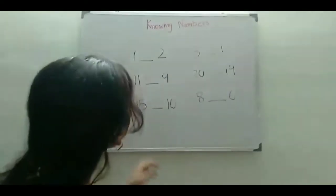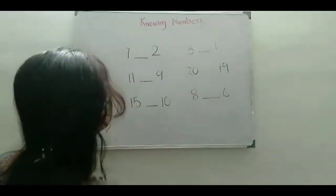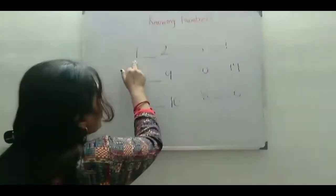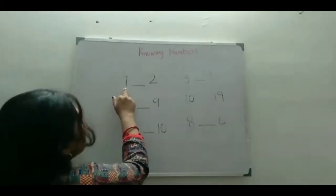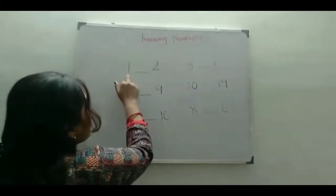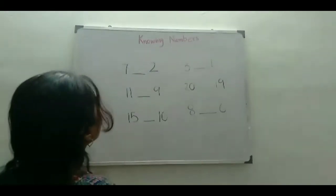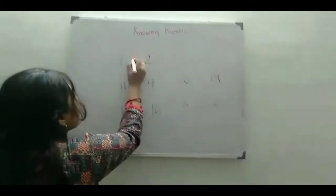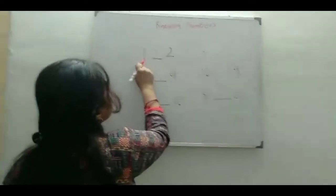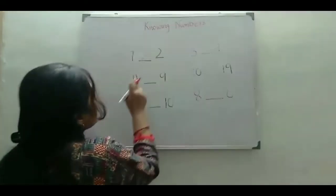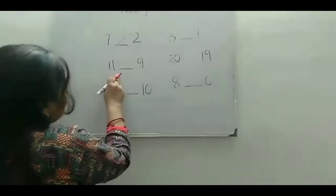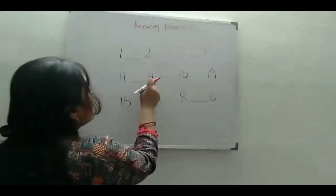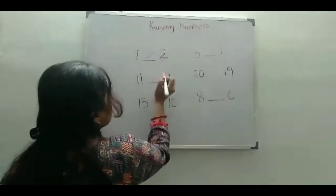Okay children, now you can see the numbers. Here is 7 and here is 2. We know that 7 is greater than 2 — 7 is always greater than 2. So we have to mark the number just like the greater than sign: 7 is greater than 2. Next one is 11 and this is 9. We know that 11 is always greater than 9, so the sign should be the greater than sign.